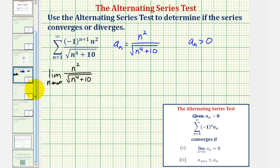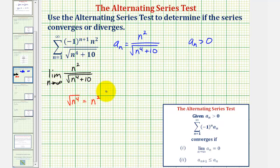There is a shortcut method for determining this limit by looking at the degree of the numerator and denominator. Notice how the degree of the numerator is degree two. Looking at the denominator, the plus ten is irrelevant as n approaches infinity, so we can think of the denominator as the square root of n to the fourth, which equals n squared — degree two as well. When the degree of the numerator and denominator are the same, the limit equals the ratio of the leading coefficients, which in this case is one over one.